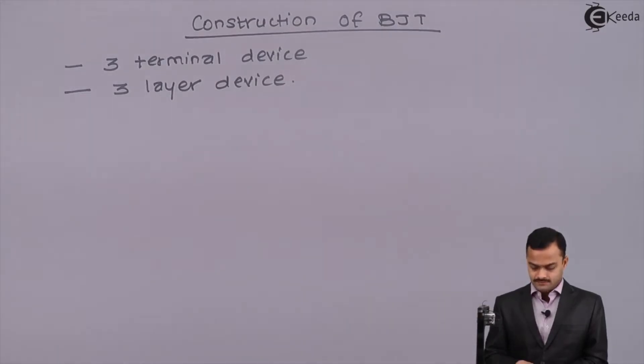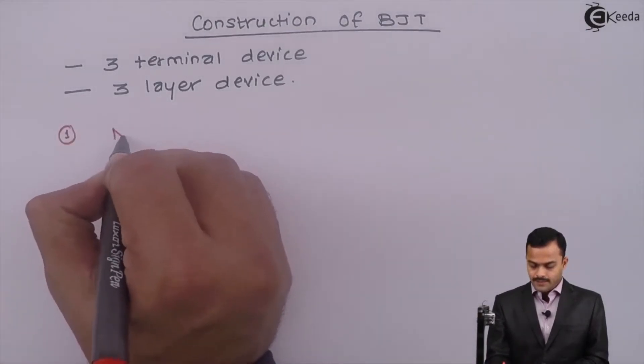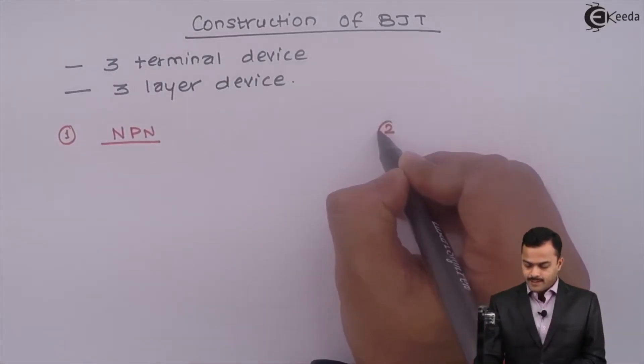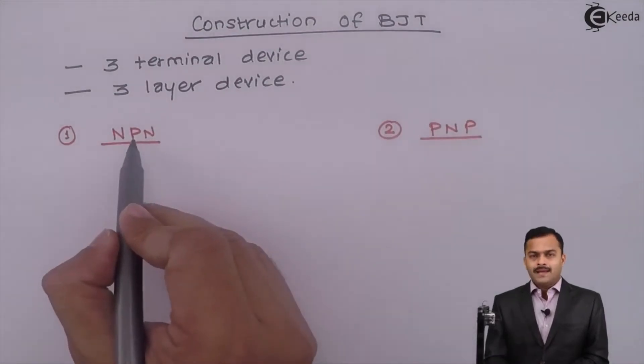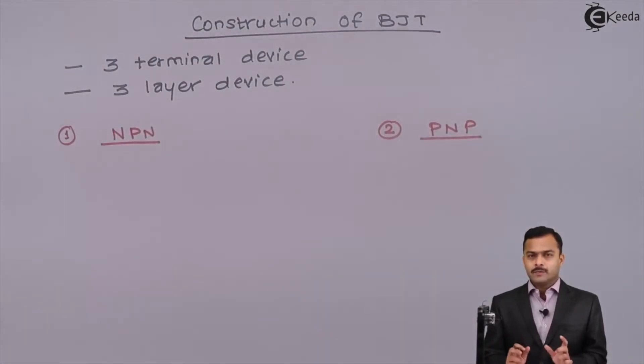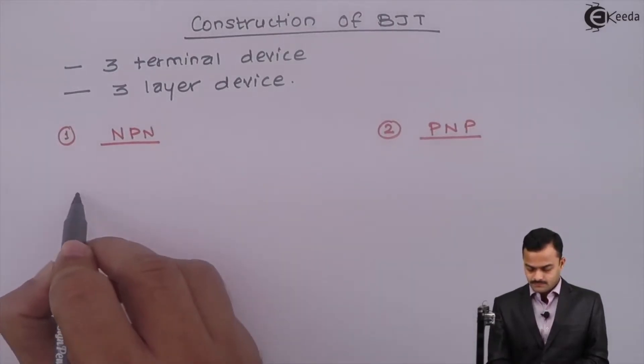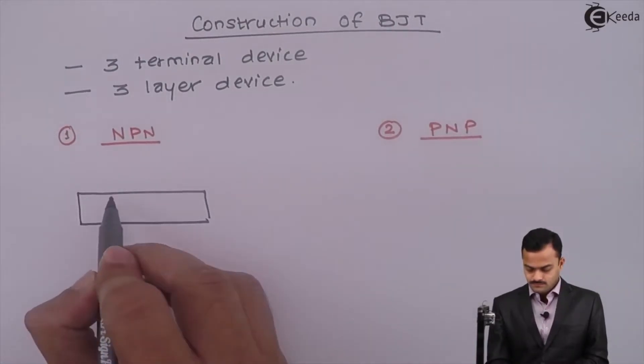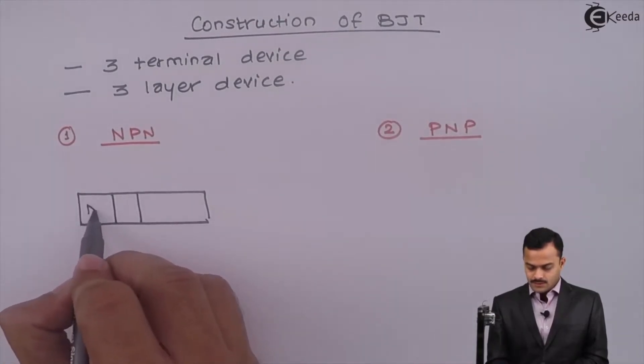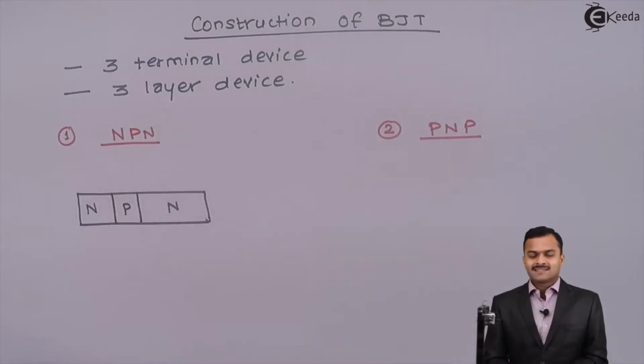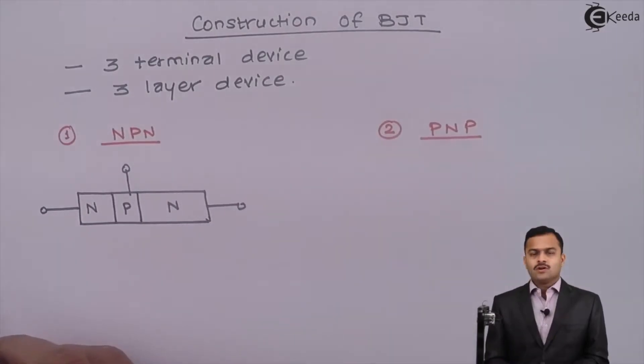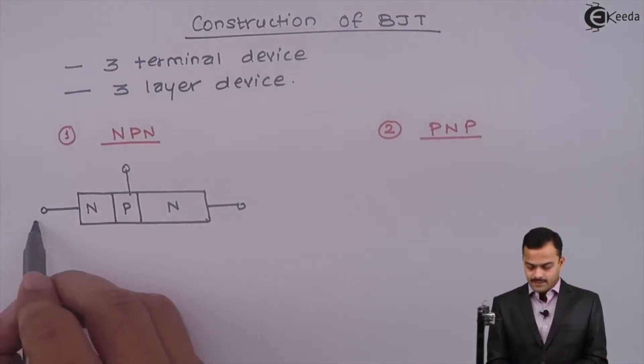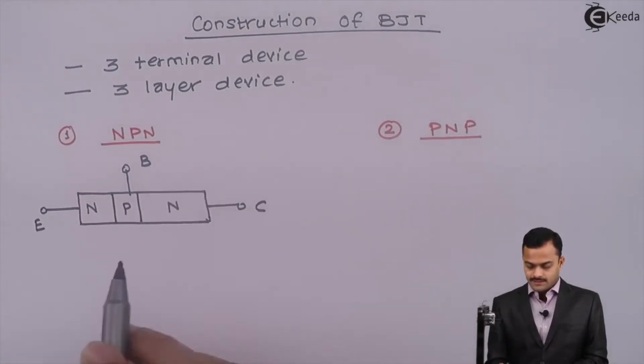Those configurations are NPN and second is PNP. In NPN transistor, P-layer is sandwiched between two N-layers. These are the two N-layers. P-layer is sandwiched between them. And three terminals are taken out. Those three terminals are called Emitter, Base, and Collector.